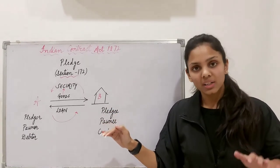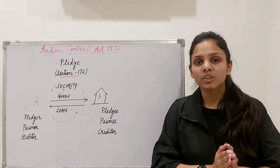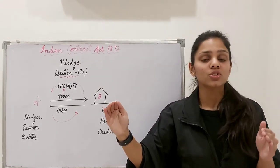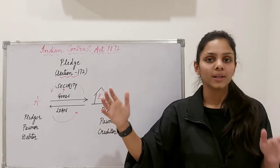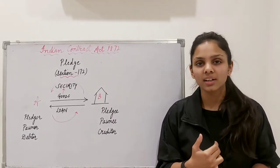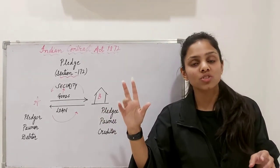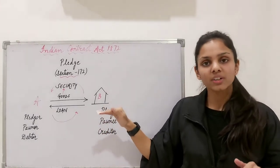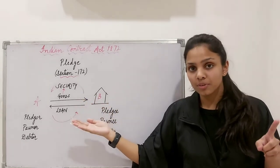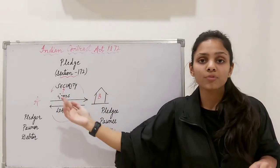Before we understand the legal language, let's understand this with a diagrammatic illustration. In Contract of Bailment, the most important thing is that there should be delivery or transfer of physical possession of goods from one person to the other — from bailor to the bailee — for some specific purpose, which could be any specific purpose, be it dry cleaning, repairing, or stitching. Similarly, in a Contract of Pledge, there is also a delivery or transfer of physical possession of goods — movable property — from one person to the other.